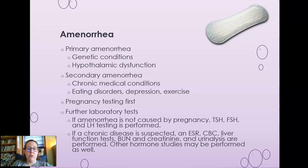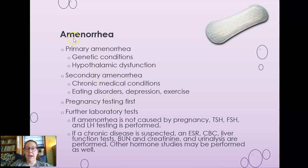Secondary amenorrhea is usually secondary to other chronic medical conditions. It can be secondary to eating disorders, depression, and excessive exercise, which leads to low body fat and hormone imbalances. If there's a problem getting enough food, the body will stop the cycle. Obviously, the first thing to do if a female had regular periods and now doesn't is rule out pregnancy.